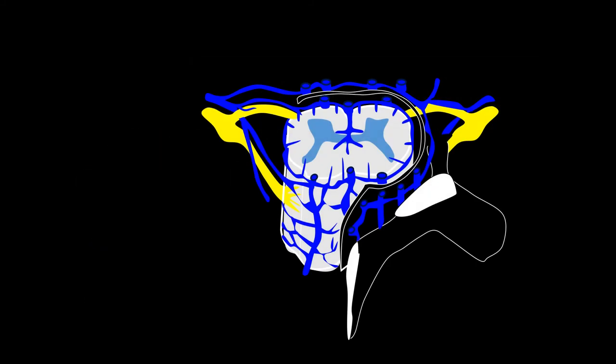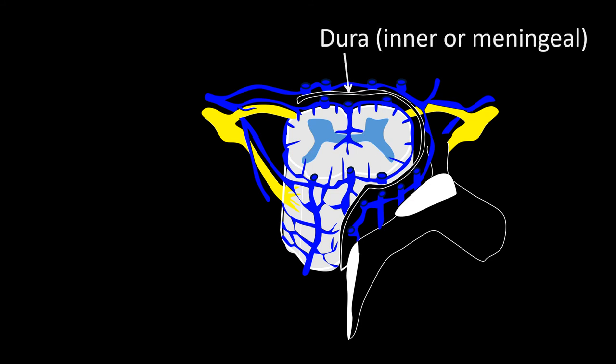One more thing before the end: the drainage of the spinal cord. The drainage of the spinal cord is rather simple. Key to understanding it is the relation between the dura and the neighboring structures. The dura of the spine, unlike in the skull, is not attached to the periosteal dura — here just called the vertebral periosteum. So the epidural space is real.